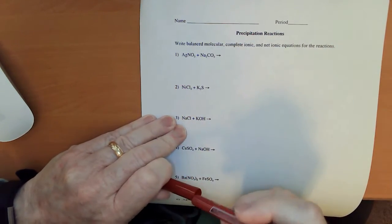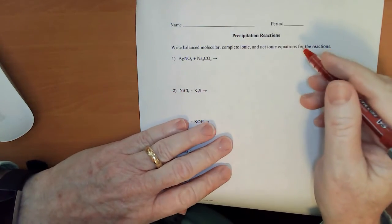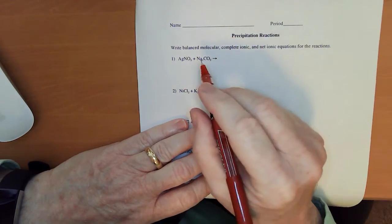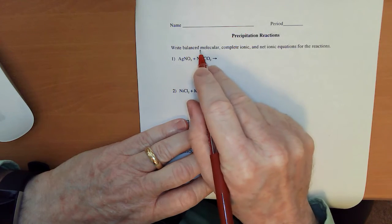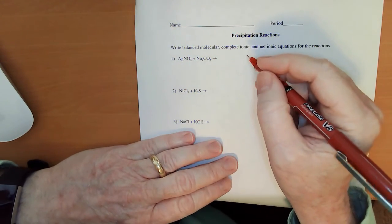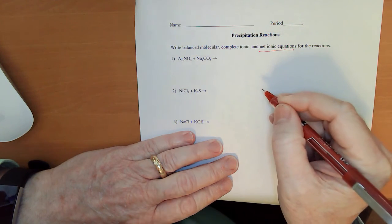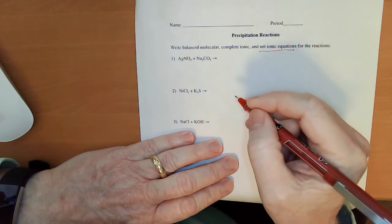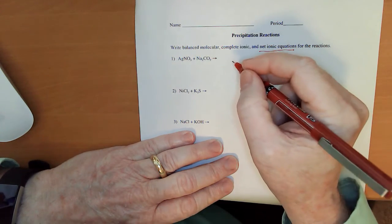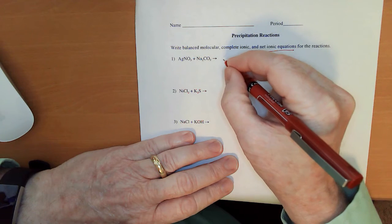Hey everybody, Morgan here. So we're going to do an answer key for the precipitation reactions and even though the instructions say to write a balanced molecular, complete ionic, and net ionic, I'm only going to do that for the first one and we're just going to go to the net ionic.